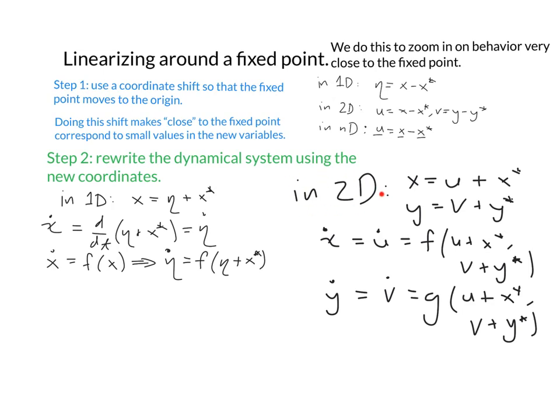In 2D, I can do this as well. Changing my coordinates around, x is u + x*, y is v + y*, ẋ is u̇, ẏ is v̇. Since ẋ was f(x,y) and ẏ was g(x,y), we get u̇ = f(u + x*, v + y*) and v̇ = g(u + x*, v + y*).